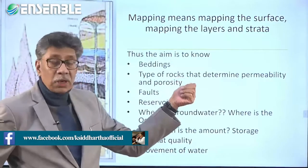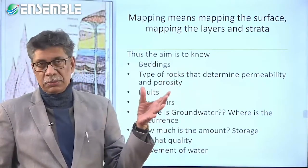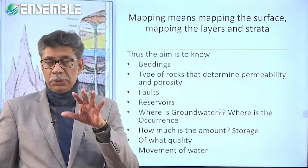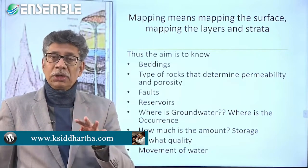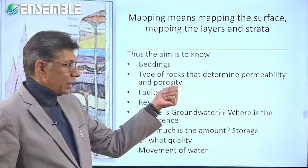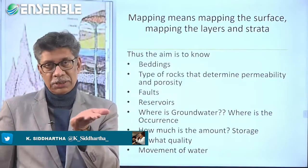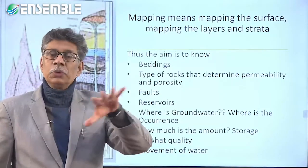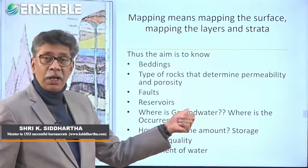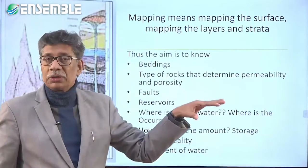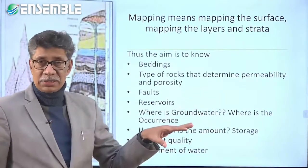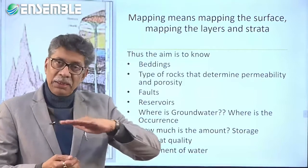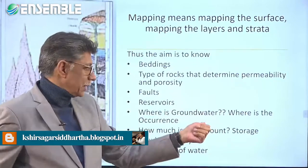The aim of mapping is to know the beddings — layers of different types of rocks separated from one another. The layer separating one bedding from another is called a bedding plane. The types of rocks determine porosity and permeability: sandstone and limestone are permeable, while shale is porous. If rocks are of different types, the amount of water stored in them will be very different. Faults allow movement of water, and reservoirs are places where water rests and is stored.